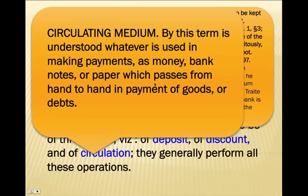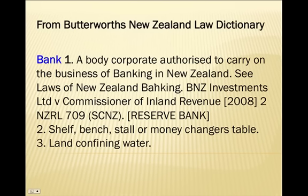Now let's look at circulation. A circulating medium — by this term is understood whatever is used in making payments as money, banknotes, or paper which passes from hand to hand in payment of goods or debts. A debt is normally a certain sum due from one person to another by a record — that which is owed.